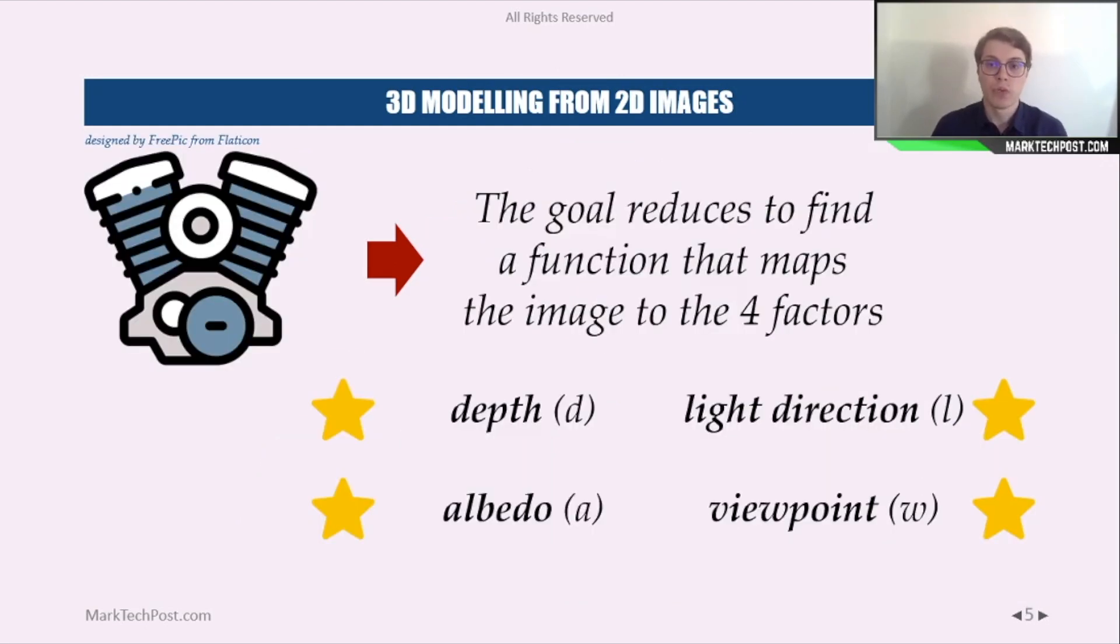The goal reduces then to find a function that maps the image to these four factors: the depth, the light direction, the albedo, and the viewpoint.